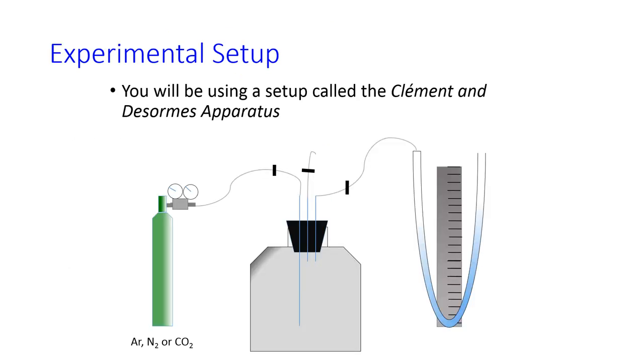The setup you're going to use is called the Clement and Dissorms apparatus, and it's basically a large container attached to a gas cylinder and a manometer for measuring pressure.